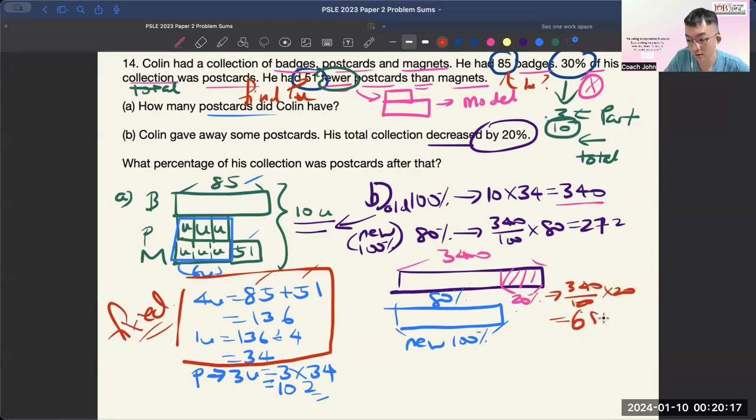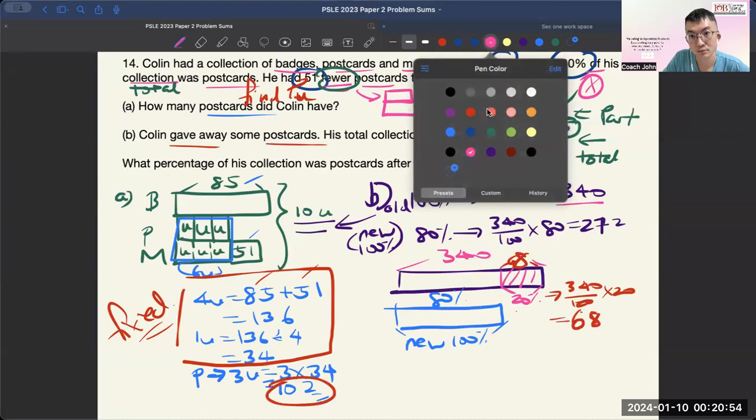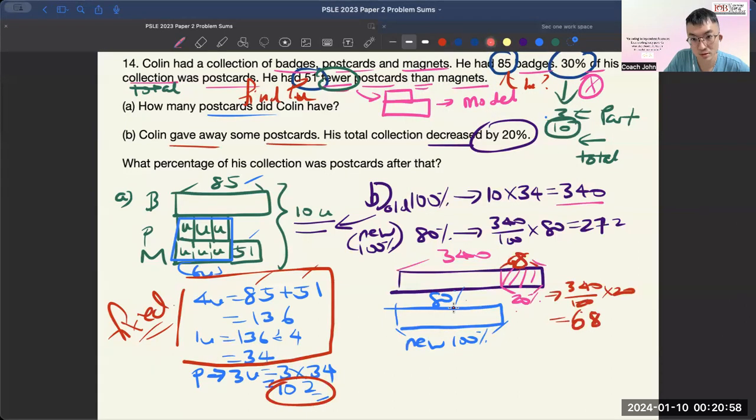So this one is 68. That means this one actually dropped by 68 because it says gave away some postcards. So the new postcards, the new P, in this case, there's a drop. So how was the drop? 102 minus 68 equals to 34.